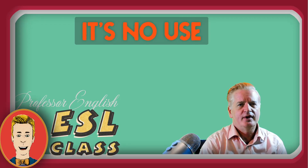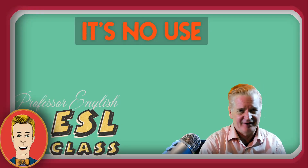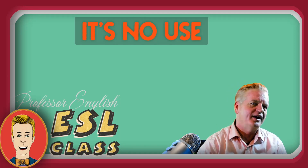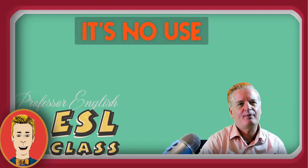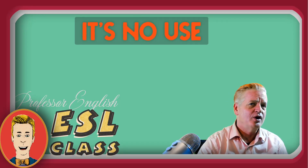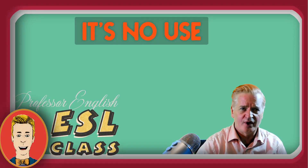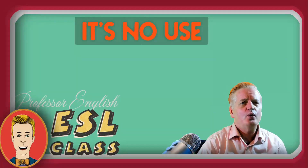Let's try another example. John is trying to convince Mary to buy a new car, but she doesn't want a new car. It doesn't matter what John says — Mary will never buy a new car. John is wasting his time trying to convince her. He thinks she should buy a new car, but it's no use talking to her. It is a waste of time talking to her. She will never listen.